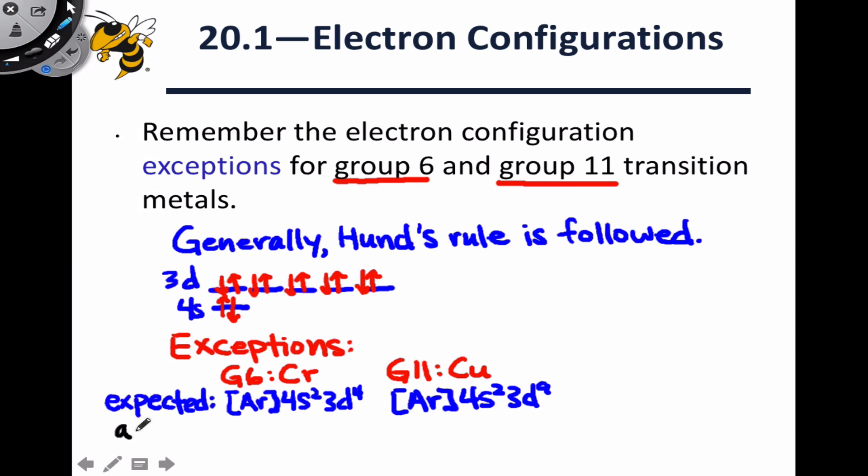The actual electron configurations here are not these expected configurations. Instead of having 2 electrons in the 4s subshell, chromium only has 1 electron in the 4s subshell, and has 3d5, 5 electrons in the 3d. Copper, instead of having 9 electrons in the 3d subshell, has 10 electrons and only 1 4s electron.